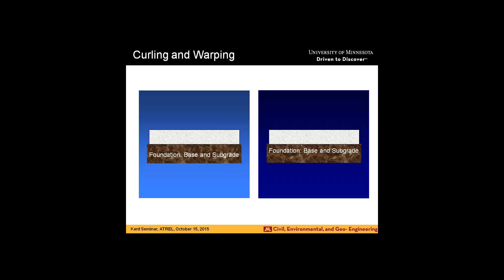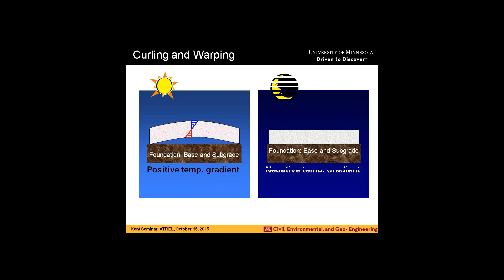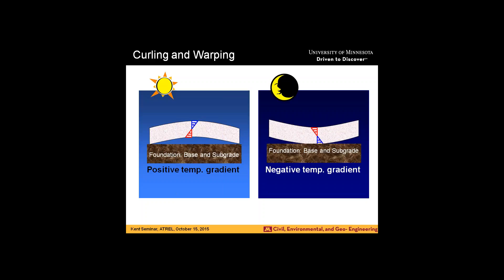Westergaard also gave a solution for temperature curling. Basically, daytime we have tension at the bottom and compression at the top; nighttime, tension at the top and compression at the bottom. If you start measuring temperature gradients in the slab, daytime gradients are greater and nighttime are smaller. So stresses at the bottom of the slab are always higher than stresses at the top, and it brings back the point that cracks should initiate at the bottom and propagate to the top.